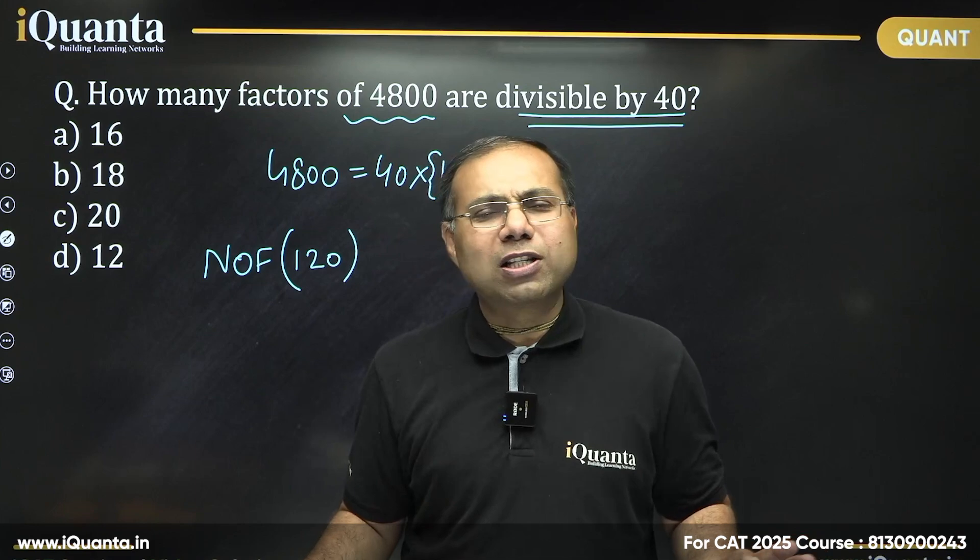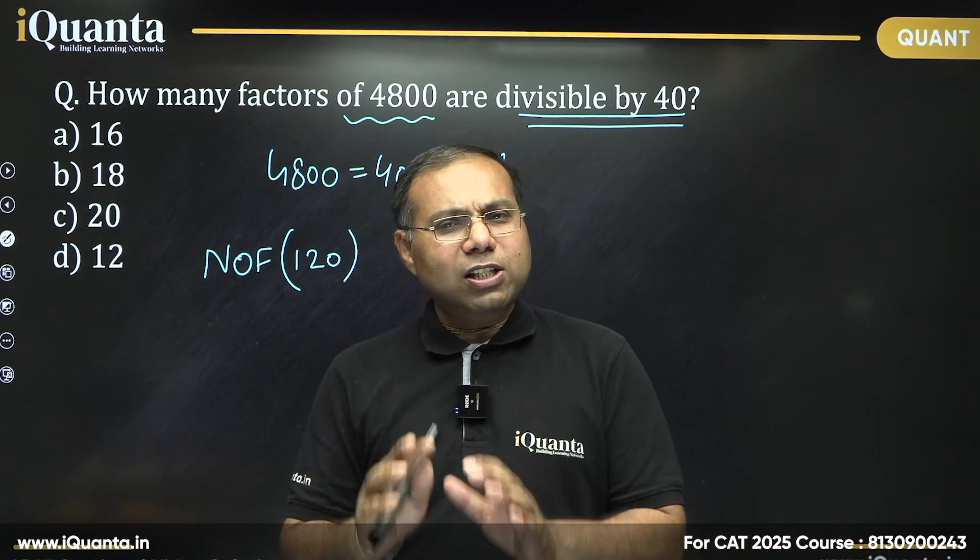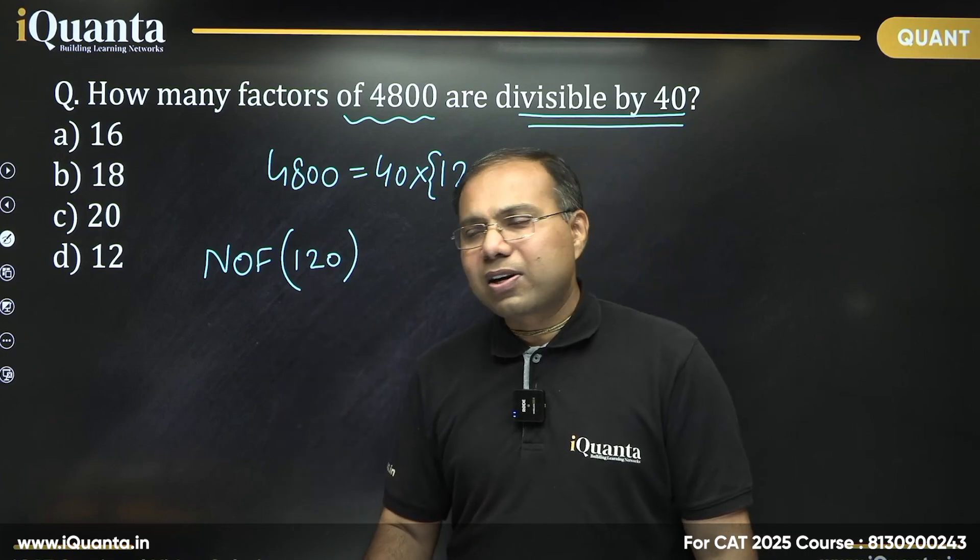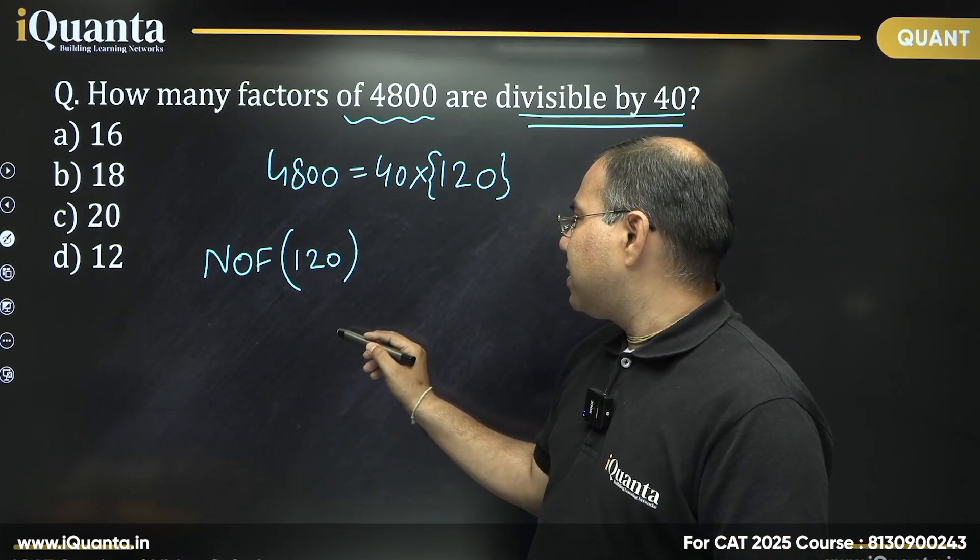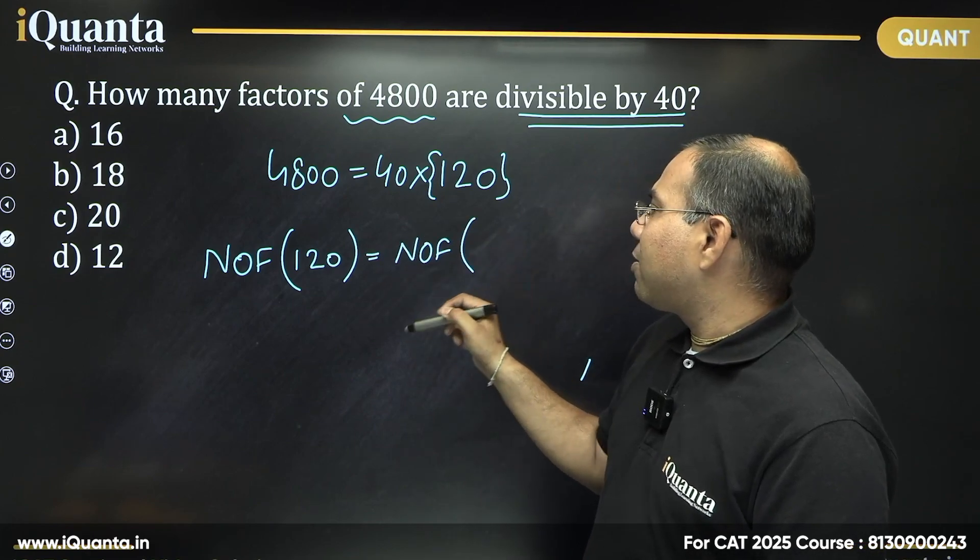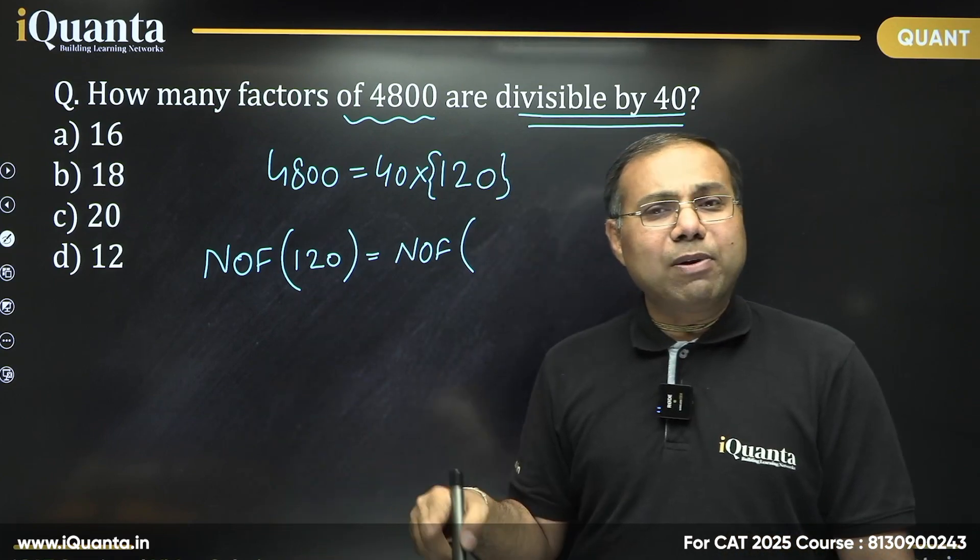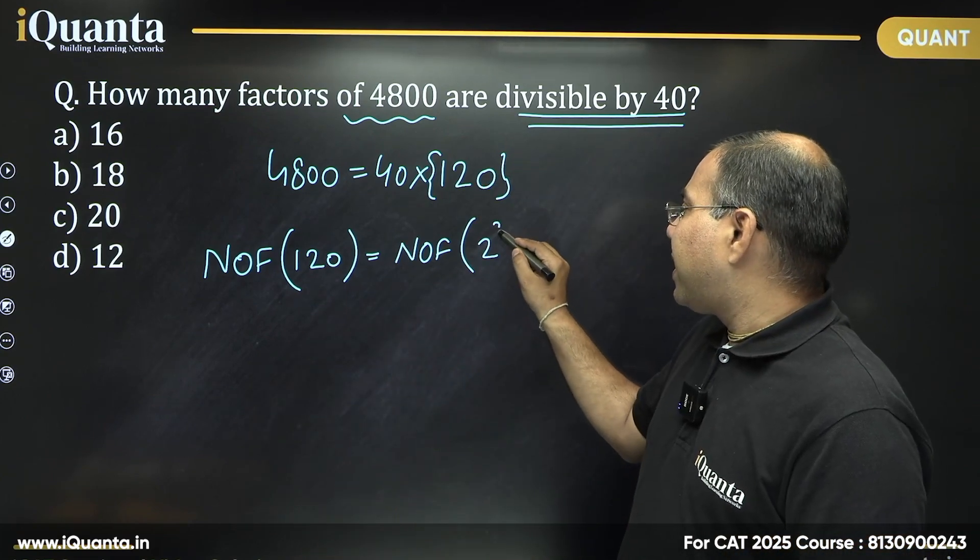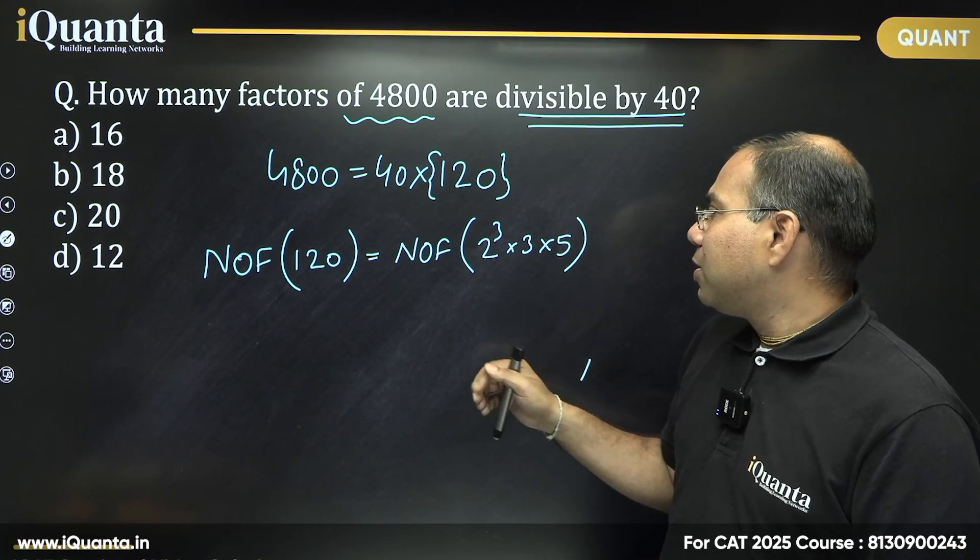Now that becomes a very basic question, simple question of factors. So how to do that? I am sure all of you are familiar with that. We just need to factorize this number first, right? So write this number in its prime factorized form. So this 120 is basically a number of factors of 120 we want to find out. So 120 factorization. So this is 15 times 8, 8 means 2 cube, right? And 15 means 3 into 5. So that is a prime factorization of this number.